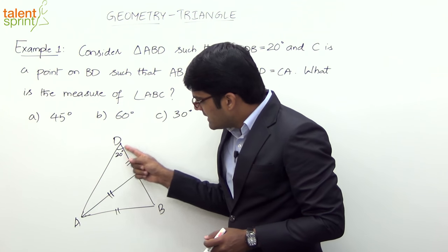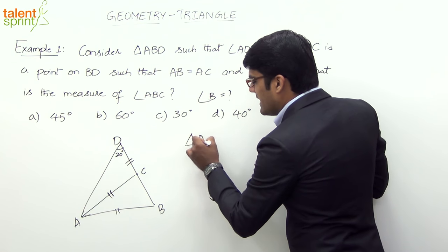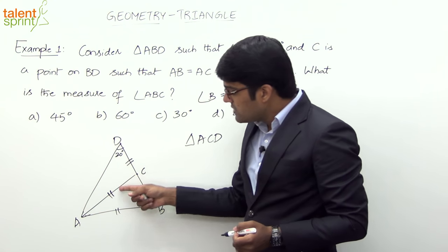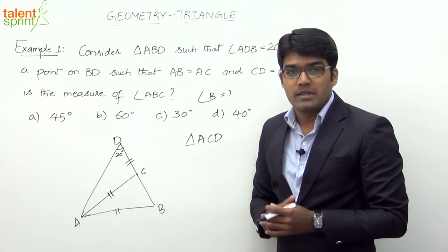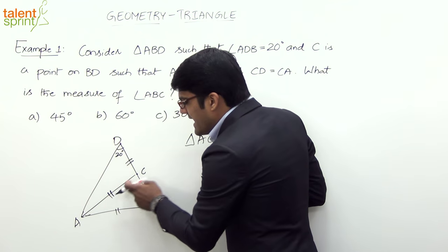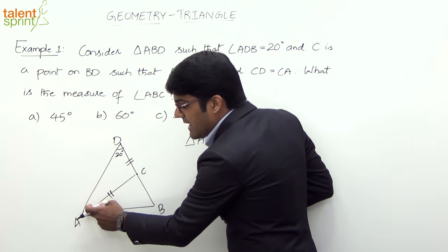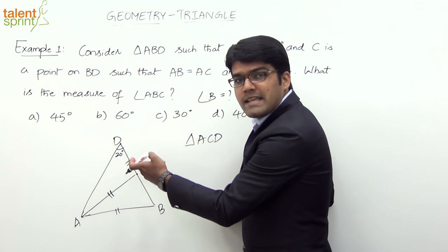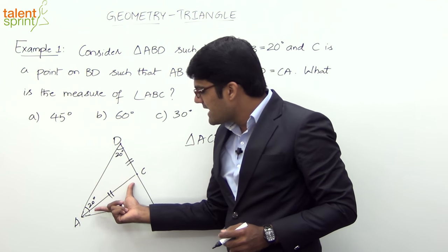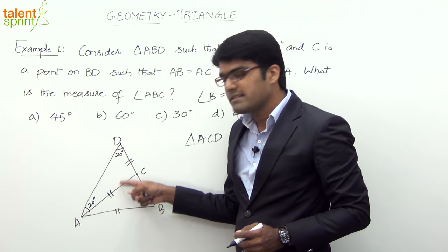In triangle ACD, we see that AC equals CD. If two sides are equal, their opposite angles will also be equal. For side AC, the opposite angle is D, which is 20 degrees. For side CD, the opposite angle is A. Since these two sides are equal, this angle will also be 20 degrees.